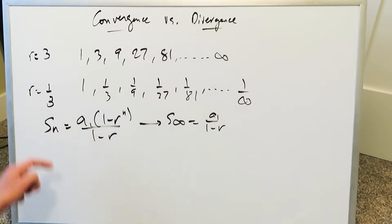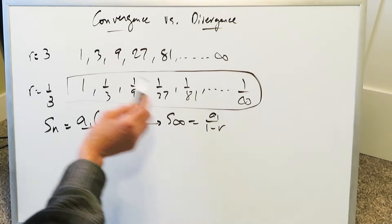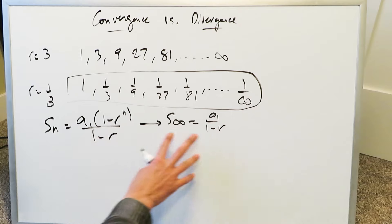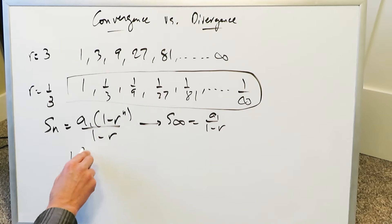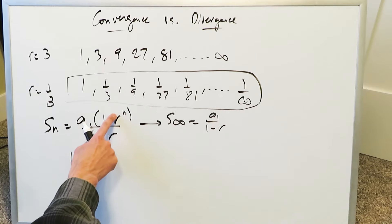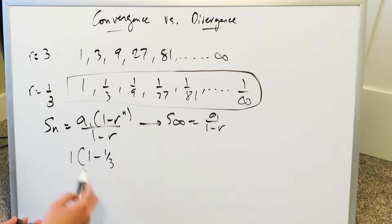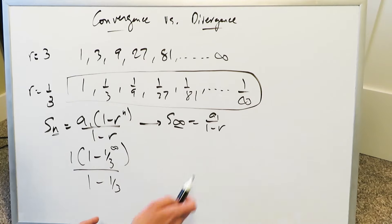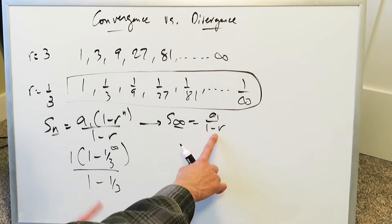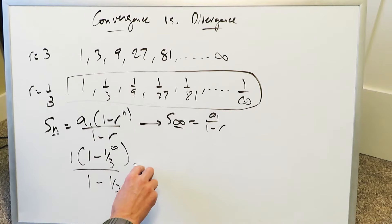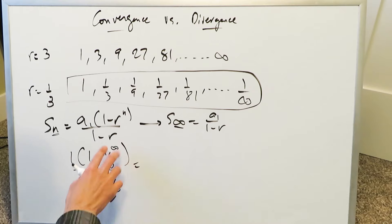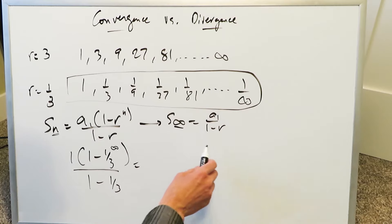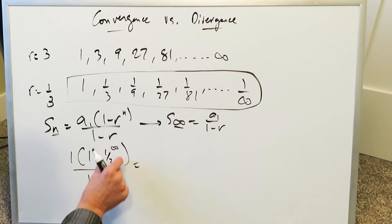Let's look at this formula with respect to the sequence 1, 1/3, 1/9... viewed as a series. In the formulaic sense, without using the shortcut, your first term is 1, multiplied by (1 minus (1/3)ⁿ), where n goes to infinity, divided by (1 minus 1/3). Whenever you see a fractional number raised to the power of infinity, it will always equal 0. The limiting value of (1/3)^∞ is 0.